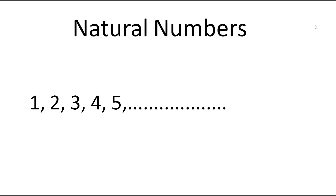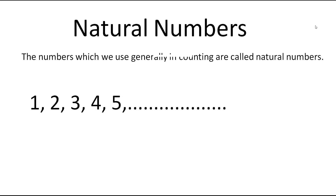Whenever we count, we start from 1, 2, 3, 4, 5 and so on. These numbers are called natural numbers. So, the numbers which we use generally in counting are called natural numbers.